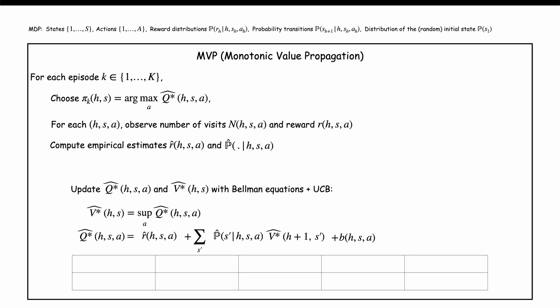Now, how does that work concretely? Start from V star of H plus 1, which is equal to 0. It's an empty stop. Then, you can use the second Bellman equation to compute q star of H. Then, you have q star of H. So, you can use the first Bellman equation to estimate v star of H. Then, you have v star of H. So, you can use the second Bellman equation to estimate q star of H minus 1. Then you have q star of h minus 1. So you can use the first Bellman equation to estimate v star of h minus 1 and so on until q star of 1.